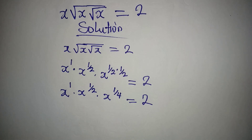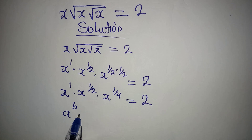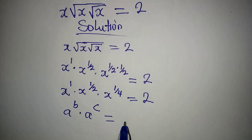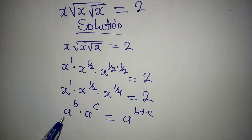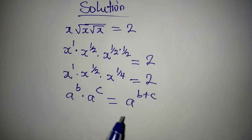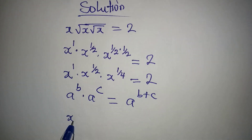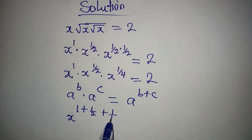Now let's apply one of the laws of indices that says: if you have a to the power of b multiplied by a to the power of c, this is the same as a to the power of b plus c. You pick one of the bases — as long as they are the same — and add the powers. I'm going to do the same thing here and add the powers. The base is x, so I'll have 1 plus 1/2 plus 1/4.